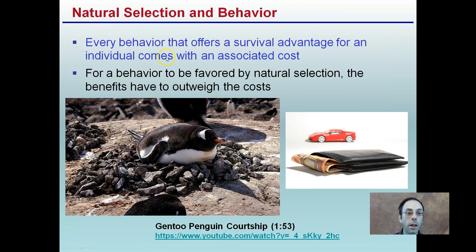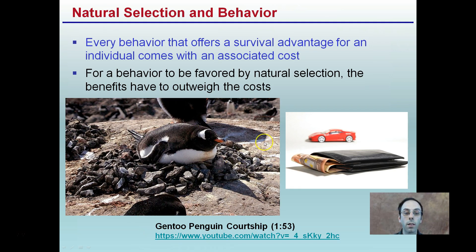Every behavior that offers a survival advantage for an individual comes with an associated cost. For a behavior to be favored by natural selection, the benefits must outweigh the cost. For example, in penguin courtship, the male goes around and creates a nest of rocks, with the goal of having a better rock selection than those around him so that a female will select him. This cost-benefit ratio is involved with all walks of life — if the benefits don't outweigh the cost, it's not advantageous for that species.